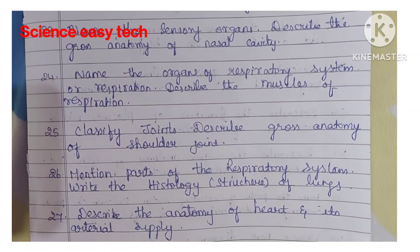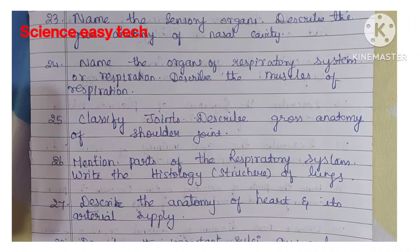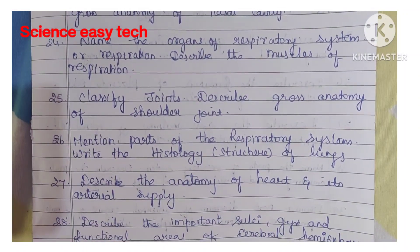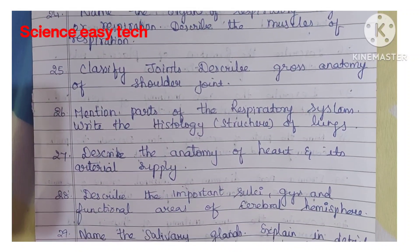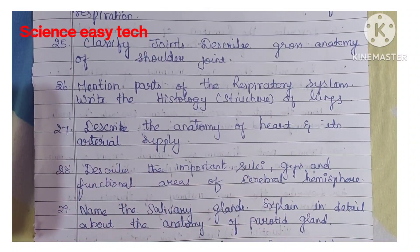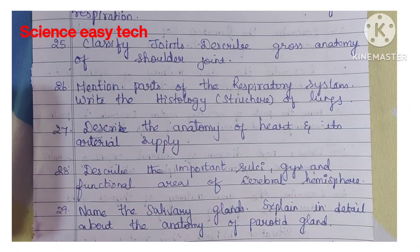Twenty-fourth question, name the organs of respiratory system and describe the muscles of respiration. Twenty-fifth question, classify joints and describe gross anatomy of shoulder joint. Twenty-sixth question, mention parts of the respiratory system and write the histological structure of lungs. Twenty-seventh question, describe the lungs and describe the anatomy of heart and its arterial supply.